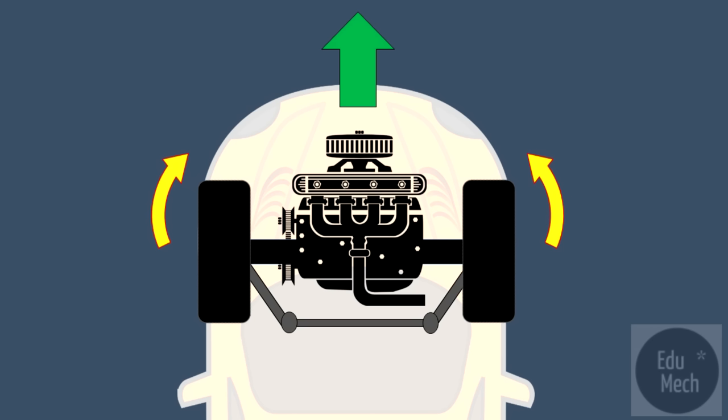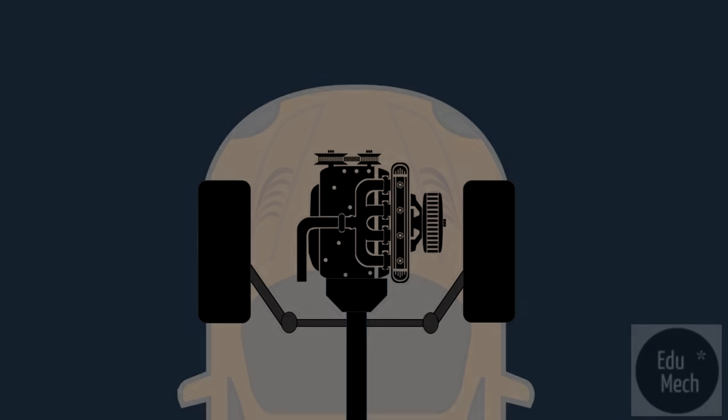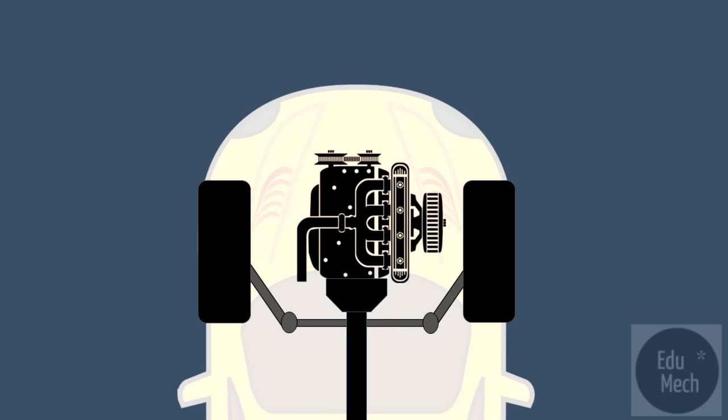Front-wheel drives also tend to understeer when cornering. Towing out introduces a small amount of oversteer to counteract this effect. Toe-in is mainly found on rear-wheel drive vehicles. The main reason for this is down to the steering and suspension setup, but also the towing gives the vehicle greater straight-line stability.